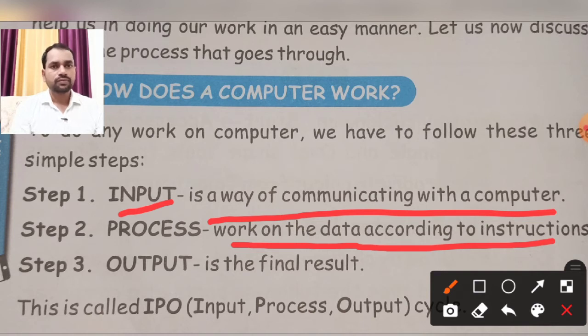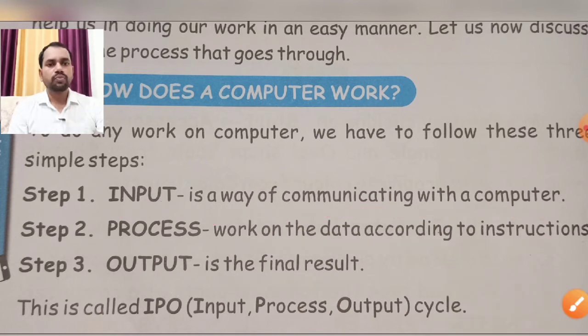Like you have added 2 plus 3 instructed, then processing should be performed. Your work should be performed. Then finally, what is the result? The result shows on the monitor screen or output. This is called IPO, means Input Process Output cycle.